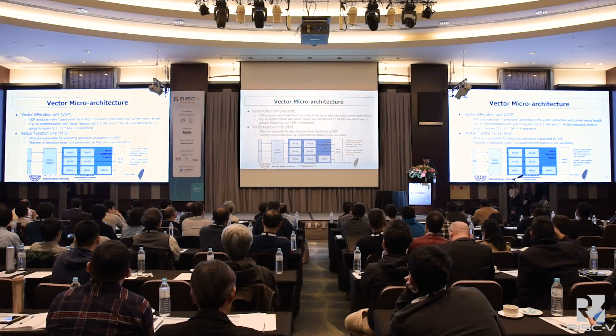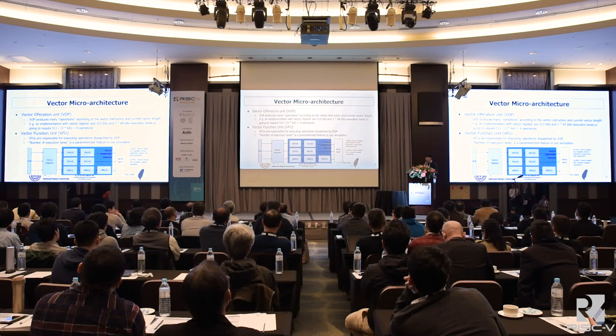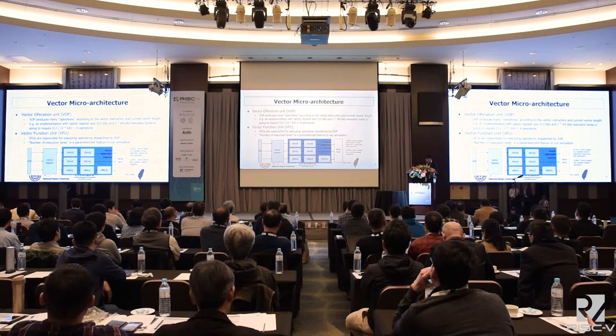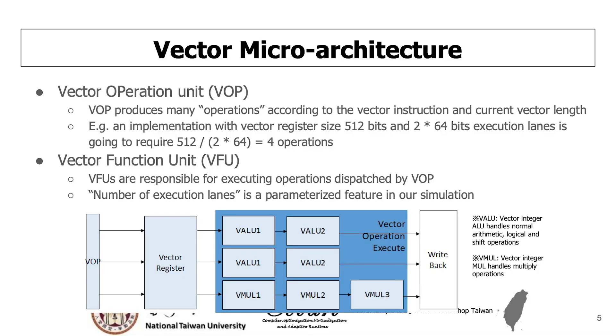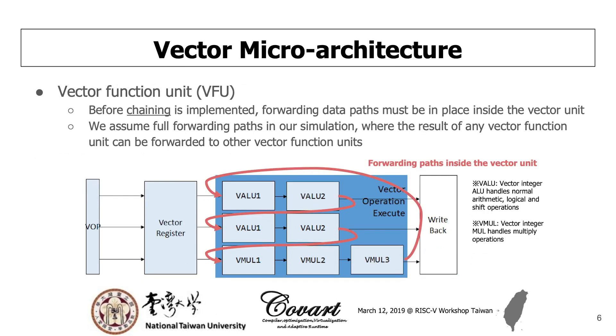For example, an implementation with vector size 512 bits and 64-bit execution lane width means the VOP will produce 8 operations for one vector instruction. The second component is the vector function unit, which is responsible for executing the operations dispatched by the VOP. The number of execution lanes inside the vector function unit will be a parameterized feature in our simulation. We will explore the impact of the number of execution lanes on chaining. Before chaining is implemented, we need a forwarding path inside the vector unit to forward the partial result from one vector function unit to another. We assume a full forwarding path in our simulation, which means any result of any vector function unit can be forwarded to any other vector function unit.